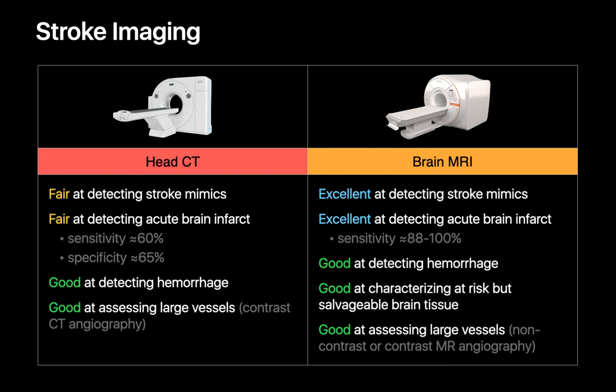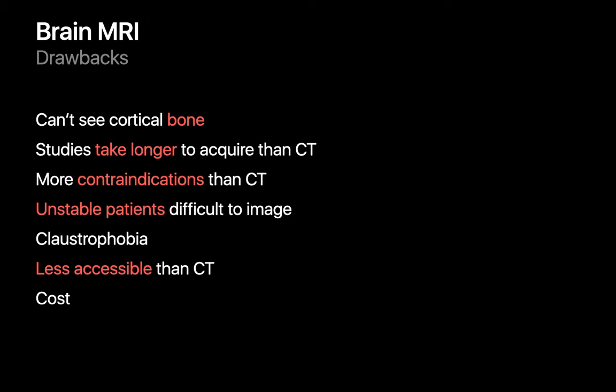Brain MRIs do have a couple of drawbacks we should be mindful of. MRIs aren't good at imaging materials poorer in water or fat, like cortical bone, and MRI exams take much more time to acquire than a CT. There are also more contraindications that may prevent a patient from getting an MRI than a CT. It's not always possible to do an MRI on an unstable patient, and claustrophobia is often a concern in stable patients. The availability of MRI is more limited than CT, and it's a much more expensive exam to perform.